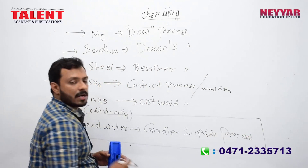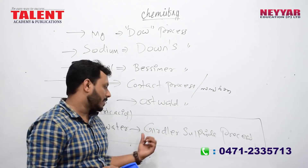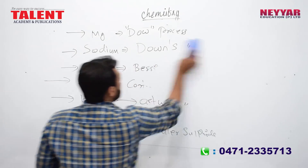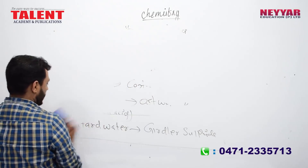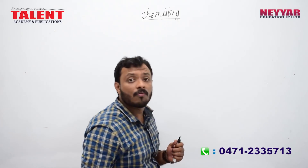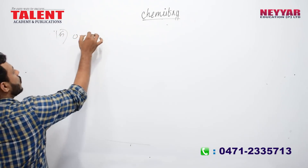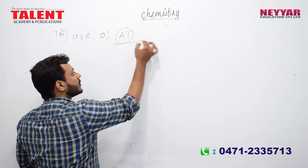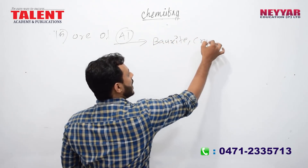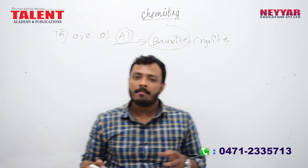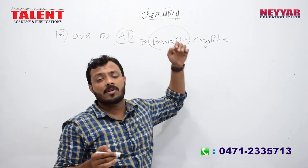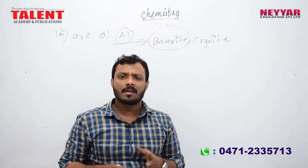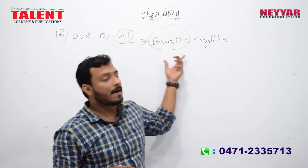The ore of aluminum is bauxite. The ore of aluminum is known as bauxite — Al₂O₃. This is the ore of aluminum going to be selected for questions.